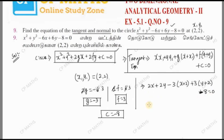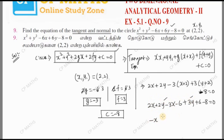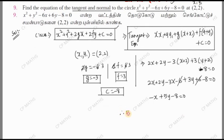Now let's simplify the equation: 2x plus 2y minus 3x minus 6 plus 3(y plus 6) minus 8 equal to 0. Multiplying out: 2x minus 3x gives minus x; 2y plus 3y gives 5y; minus 6 and plus 6 cancel; leaving minus 8. So the equation of tangent is: minus x plus 5y minus 8 equal to 0.